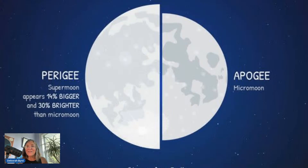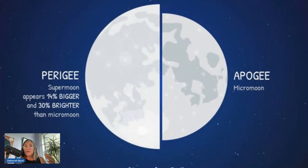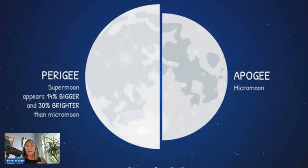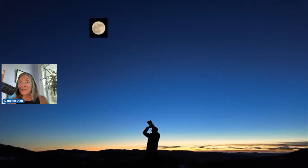One more cool thing: this May full moon is the third of three full micro moons in a row for 2025, meaning it'll be nearly at its farthest from Earth this month on the same night it's full. At its farthest, the moon will be 251,828 miles away. A supermoon — an especially close full moon — appears bigger on the sky's dome and is some 30% brighter than a full micro moon like the one we'll see this month. You might notice that the full moon on May 12th isn't casting as much light in the sky or on the ground as some full moons.